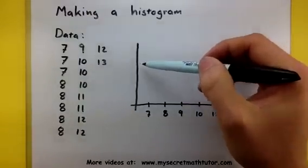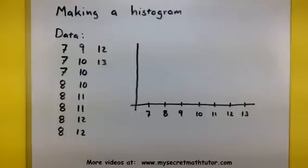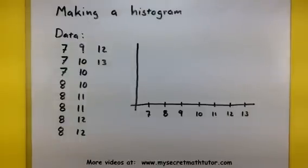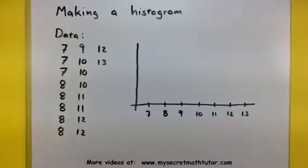Now, along the vertical bar, this is where we put our frequency. In other words, how many of these things do we have?